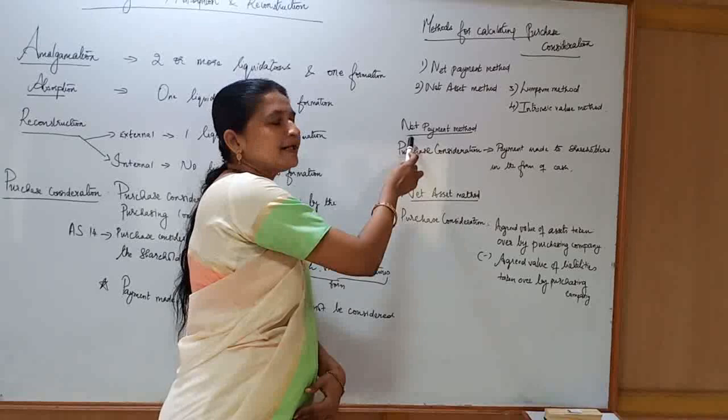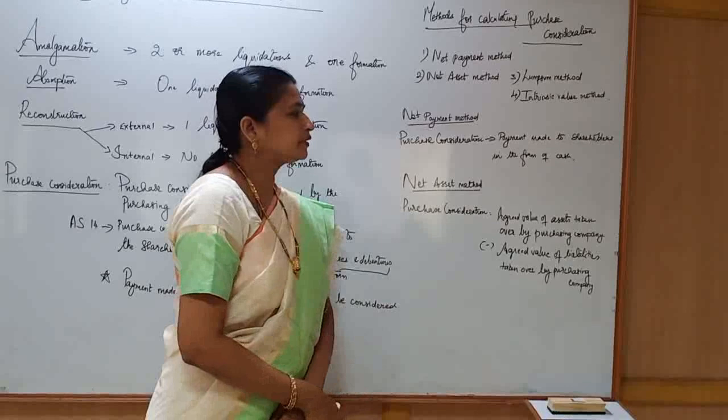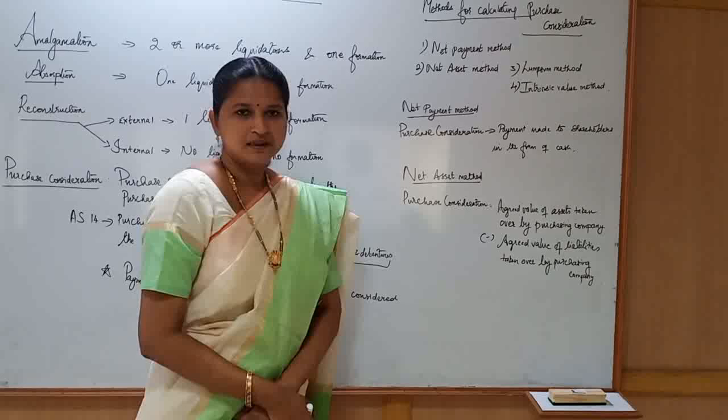First is net payment method. In case of net payment method, purchase consideration is calculated by adding all the payments made to the shareholders of the vendor company. The payment may be made in the form of cash, shares, or debentures.